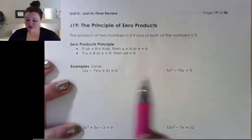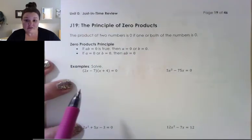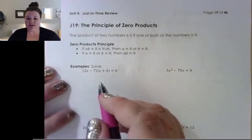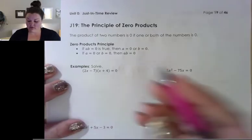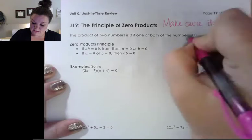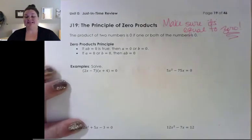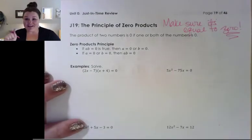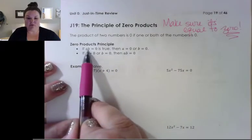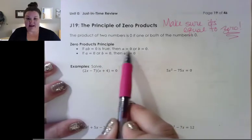Here we are at J19, which is all about the principle of zero products. This is what we're going to use to solve an equation after we've factored it. We want to make sure that our equation is equal to zero — this does not work unless you have it equal to zero. The reason we want it equal to zero is because if we have two things being multiplied that equals zero, then we know one of them has to be zero.